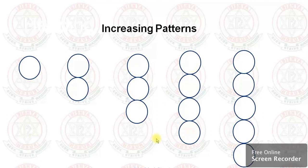It means it's increasing by one circle. So an increasing pattern means it will increase by the same number every step. If it is two, it will increase by two each step; if three, it will increase by three each step.